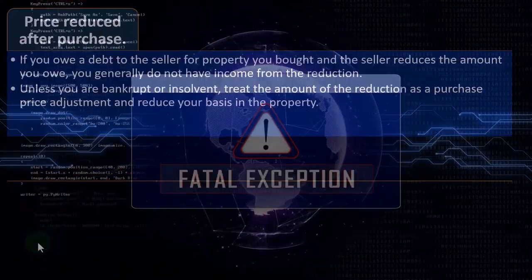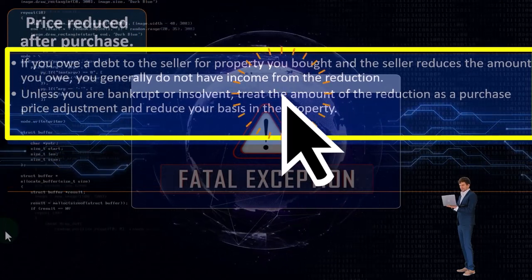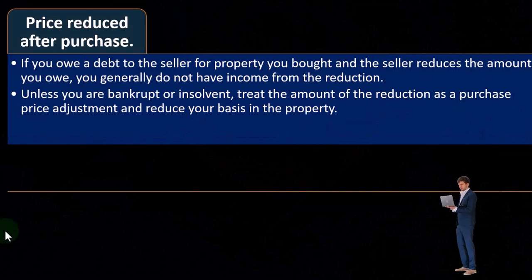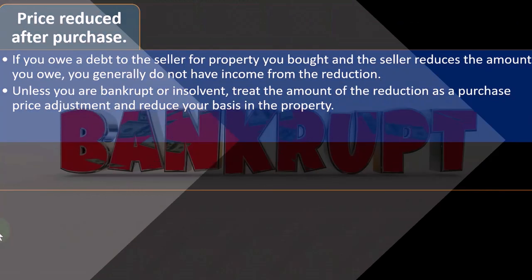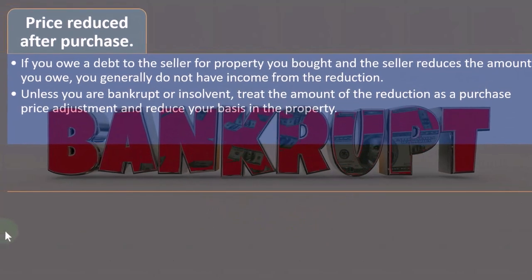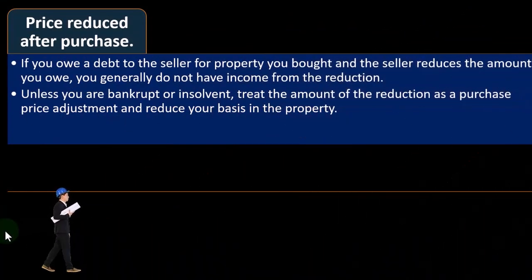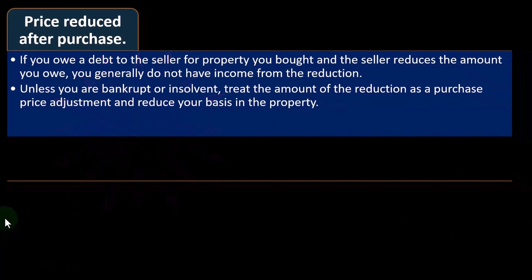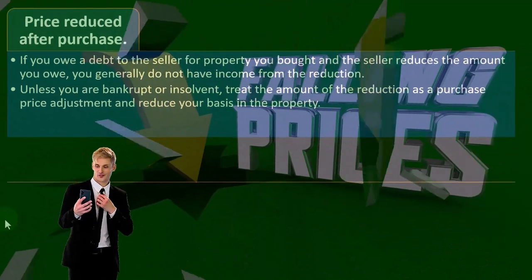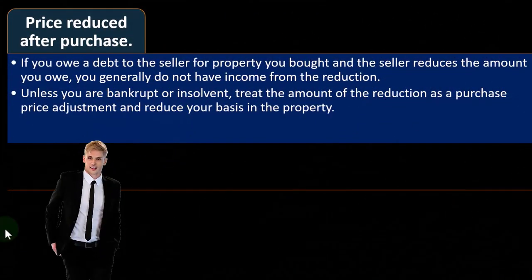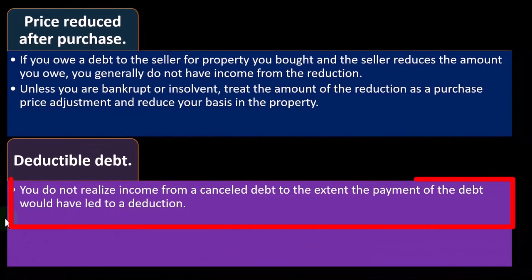Exception 1 — Price reduced after purchase: if you owe a debt to the seller for property you bought and the seller reduces the amount you owe, you generally do not have income from the reduction because they are adjusting the price. Unless you are bankrupt or insolvent, treat the amount of the reduction as a purchase price adjustment and reduce your basis in the property instead of recording income for the cancellation of the debt.